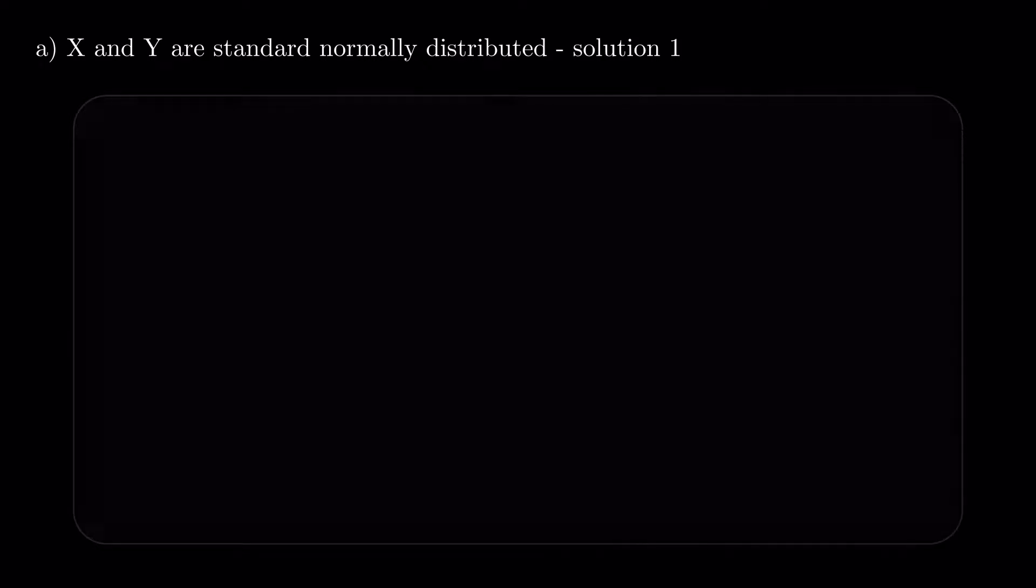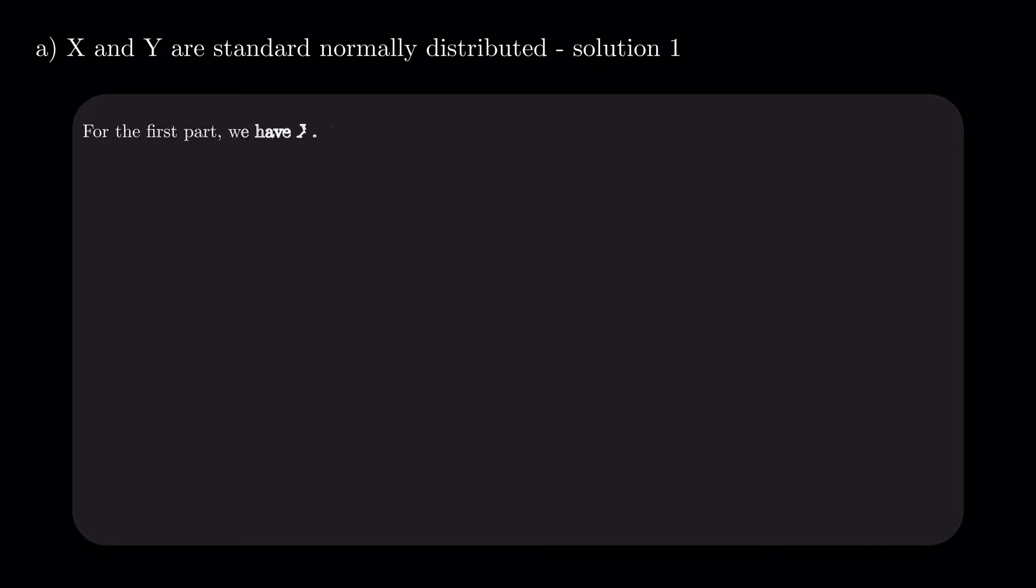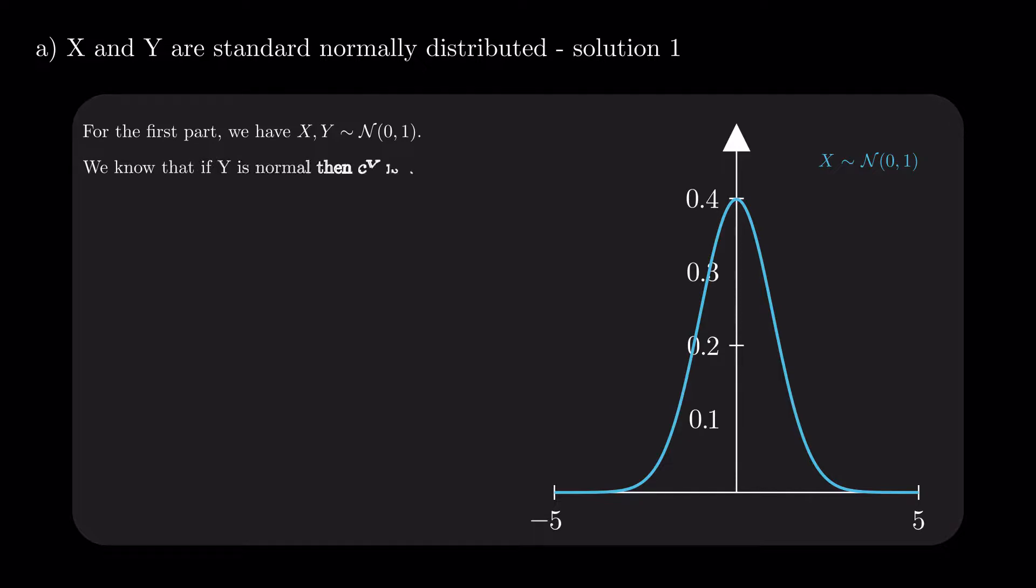This first part of the question is about two IID standard normal distributions. Firstly, we plot X on the graph. Then we know that if Y has a normal distribution, c times Y has as well, with the expectation of cY equal to c times the expectation of Y and the variance of cY equal to c squared times the variance of Y.